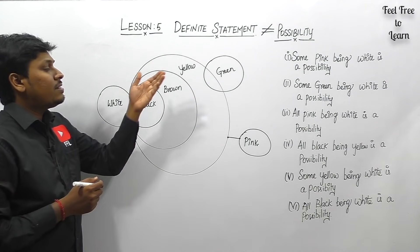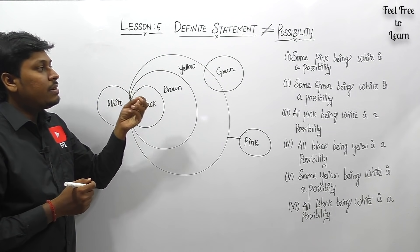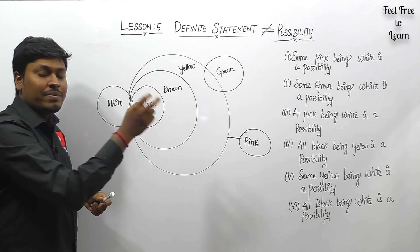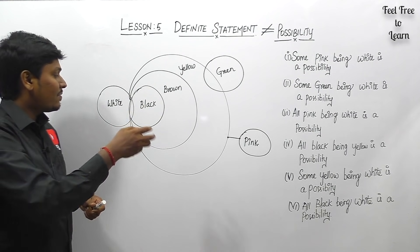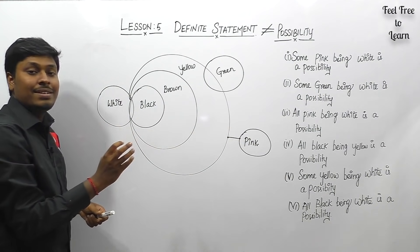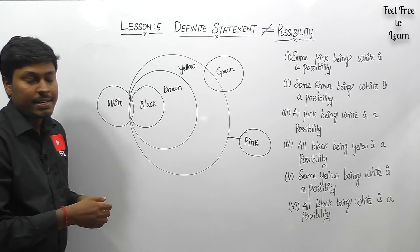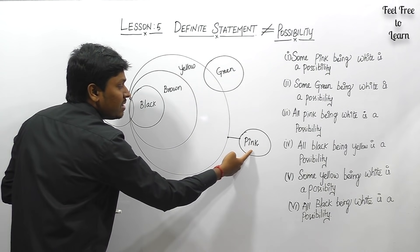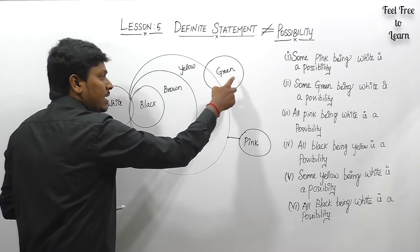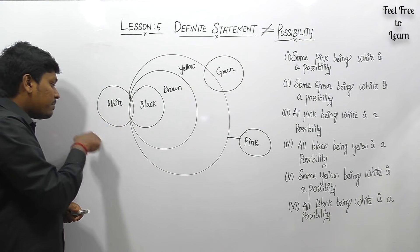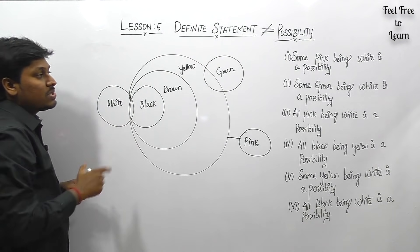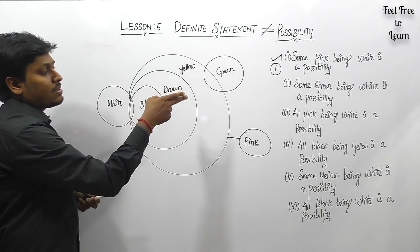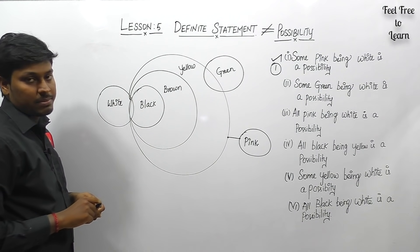Conclusion one: 'some pink being white is a possibility.' First check: is it case one or case two? There is no connection between white and pink in the statement, so it is case one. In the possible diagram, we can connect pink with white, so 'some pink being white is a possibility' follows. This is case number one.